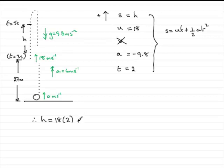plus a half at squared. So that's a half, a is the minus 9.8. And we've got t squared, t is 2, so 2 squared. So if you work this out on your calculator, what you'll find is that you get h equals 16.4, 16.4 meters.